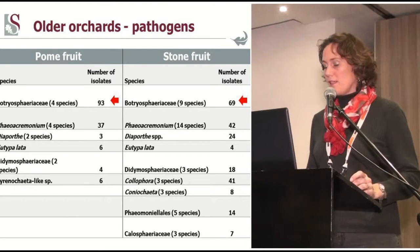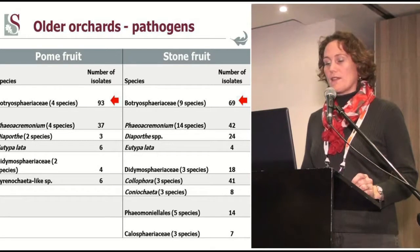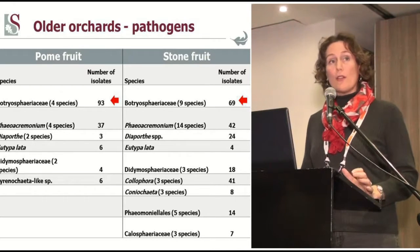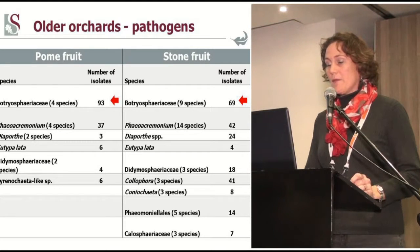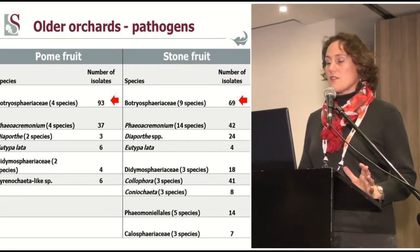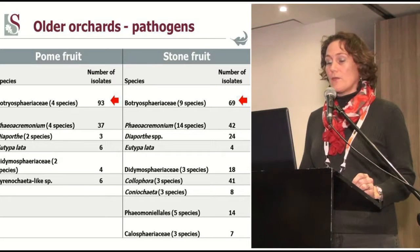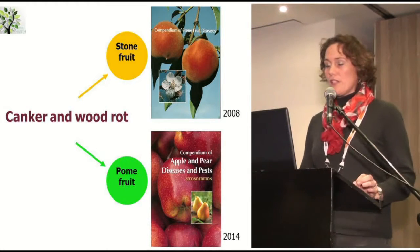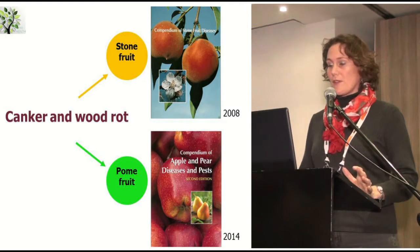The canker pathogens are not a simple group of organisms — it's really quite diverse. This table represents what we found from all the orchards in South Africa in terms of diversity associated with dieback and canker symptoms. In plant pathology, we use compendia to identify diseases — a nice compilation of diseases on a specific crop. For stone and pome fruit, I would like to highlight the different wood rot and canker pathogens that are illustrated.